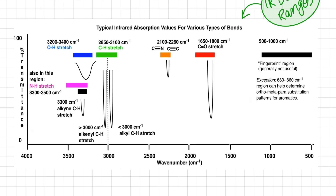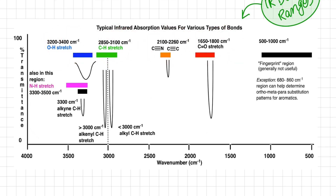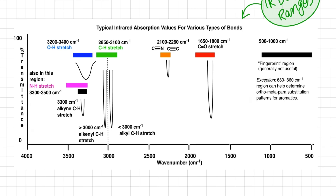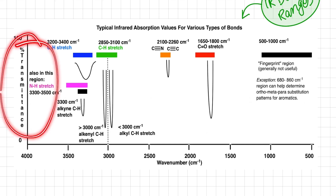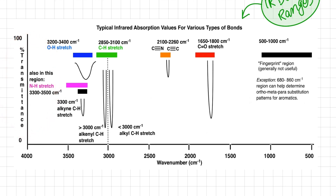One important thing to remember is that these ranges are just guidelines, and the actual peaks may vary depending on sample conditions. Also, since IR is an absorption spectroscopy but we use transmittance on the Y axis, this is because the vibrational transitions are very small and when plotted as absorbance the peaks would be too small to see clearly.